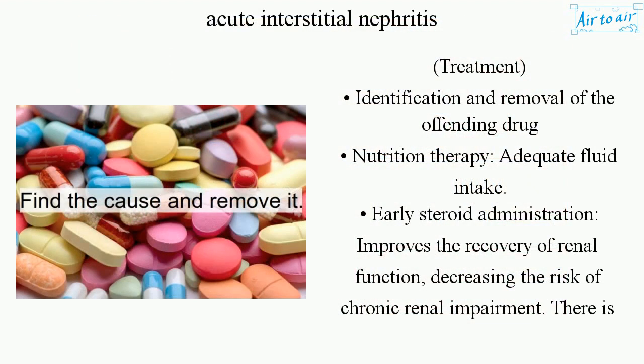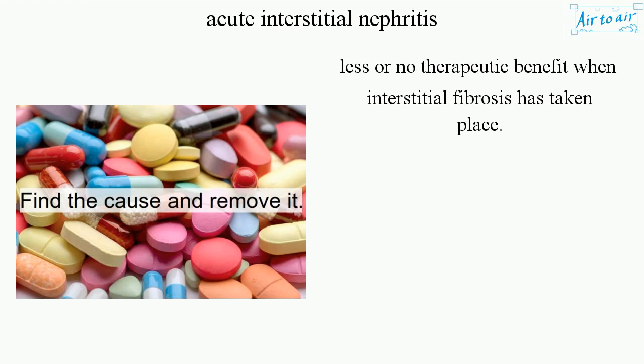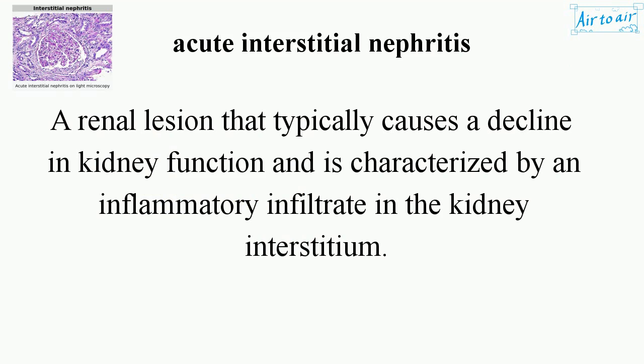Treatment includes identification and removal of the offending drug, nutrition therapy, adequate fluid intake, and early steroid administration, which improves the recovery of renal function and decreases the risk of chronic renal impairment. There is less or no therapeutic benefit when interstitial fibrosis has already taken place.